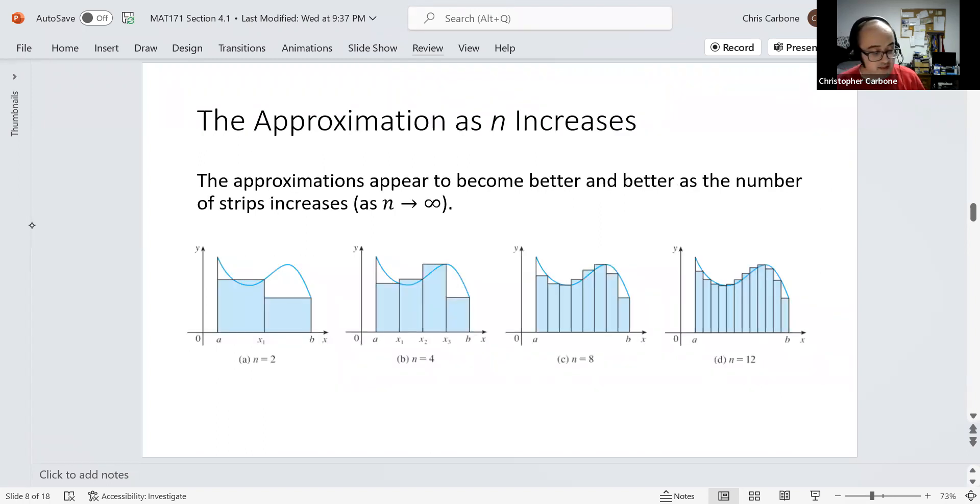And this approximation, as we increase those number of strips, as n increases, the approximations appear to be better and better. As we increase that, and we increase it towards infinity, you could see in the pictures I have here, with a strip size of 2, it doesn't really describe it well, where we have a little extra space but a whole bunch of empty space. 4 does a slightly better job, but still not that good. As we get to 8 and then even 12, we could see that the extra and empty spaces are getting smaller and smaller.